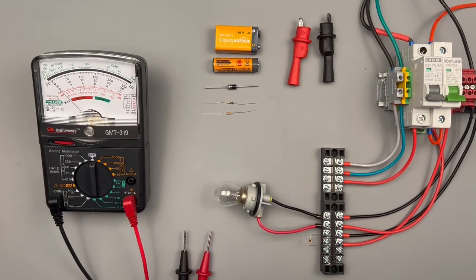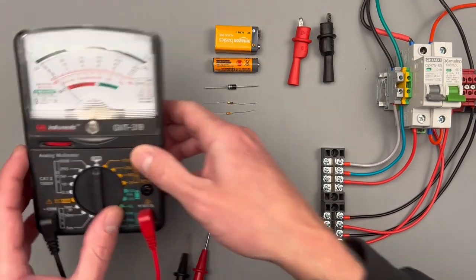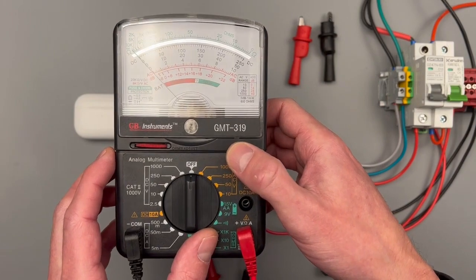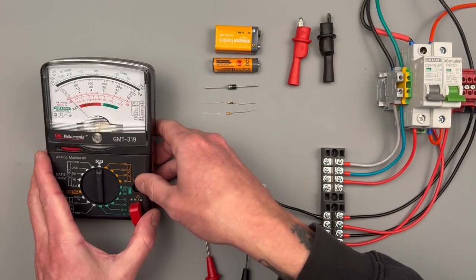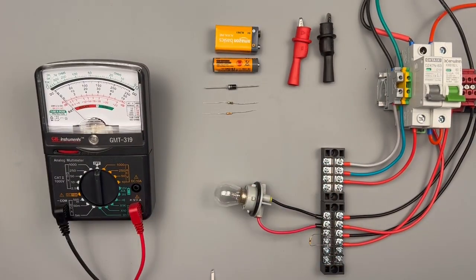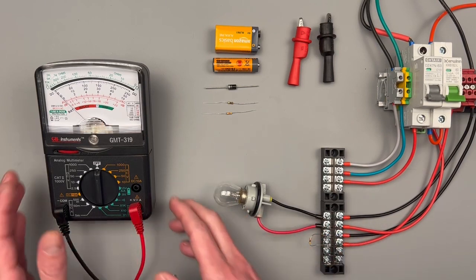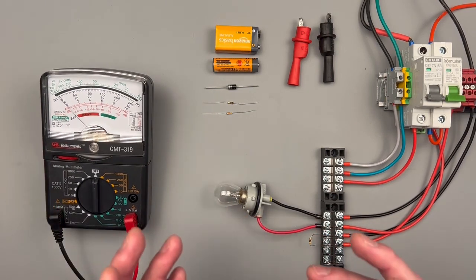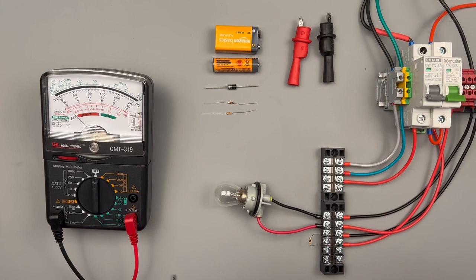Hello everyone! Today we're going to be going over the GB Instruments GMT319 Analog Multimeter. This is being reviewed on the channel because it made Popular Mechanics top multimeter list for 2024. So we'll be going over all the different settings.